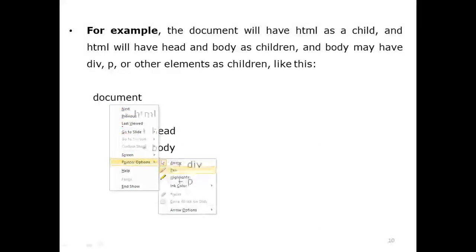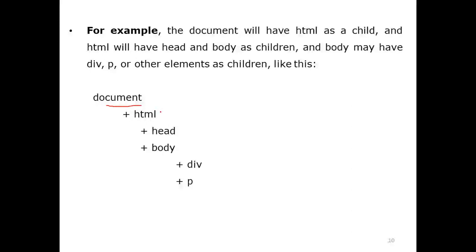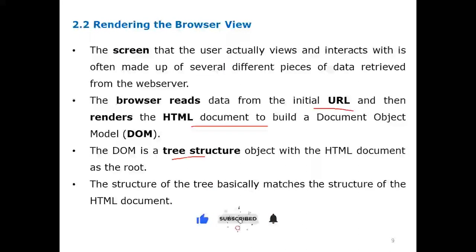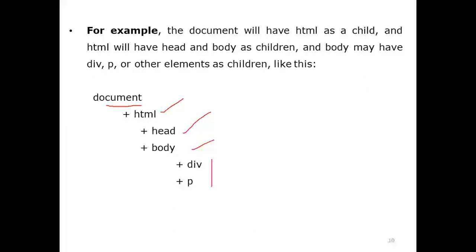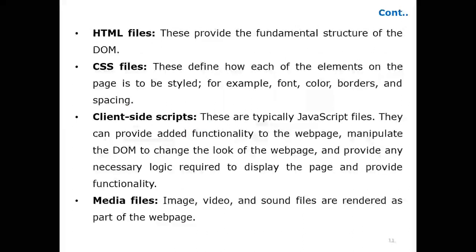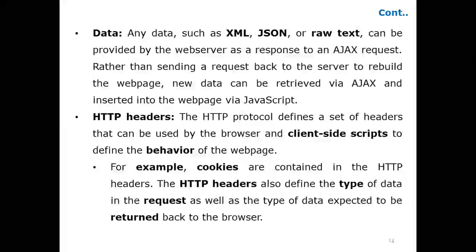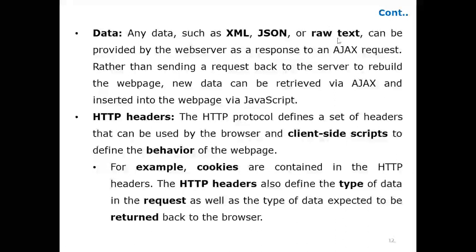The document received is an entire file. In that file, the hierarchy is HTML followed by head and body, and inside the body there are different tags. The document consisting of HTML files, CSS files, client-side scripting like JavaScript, media files like images, video, and sound, and also data in Excel, XML, JSON, or raw data format.